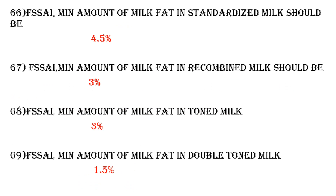Question 67: According to FSSAI, the minimum amount of milk fat in recombined milk should be 3%. The minimum amount of milk fat in toned milk is also 3%.